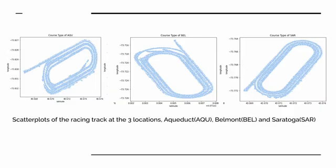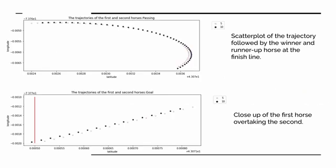These three scatter plots show the racing track at three different locations: Aqueduct, Belmont, and Saratoga. The run-up distance for Aqueduct is maximum compared to Belmont and Saratoga. This scatter plot shows the trajectory followed by the winner and runner-up horse at the finish line. The winner horse overtook the initially leading horse by moving slightly to the outside of the track. The performance of a horse in a race largely depends on the pacing strategy, the skill of the jockey, and its final decision-making with respect to drafting.